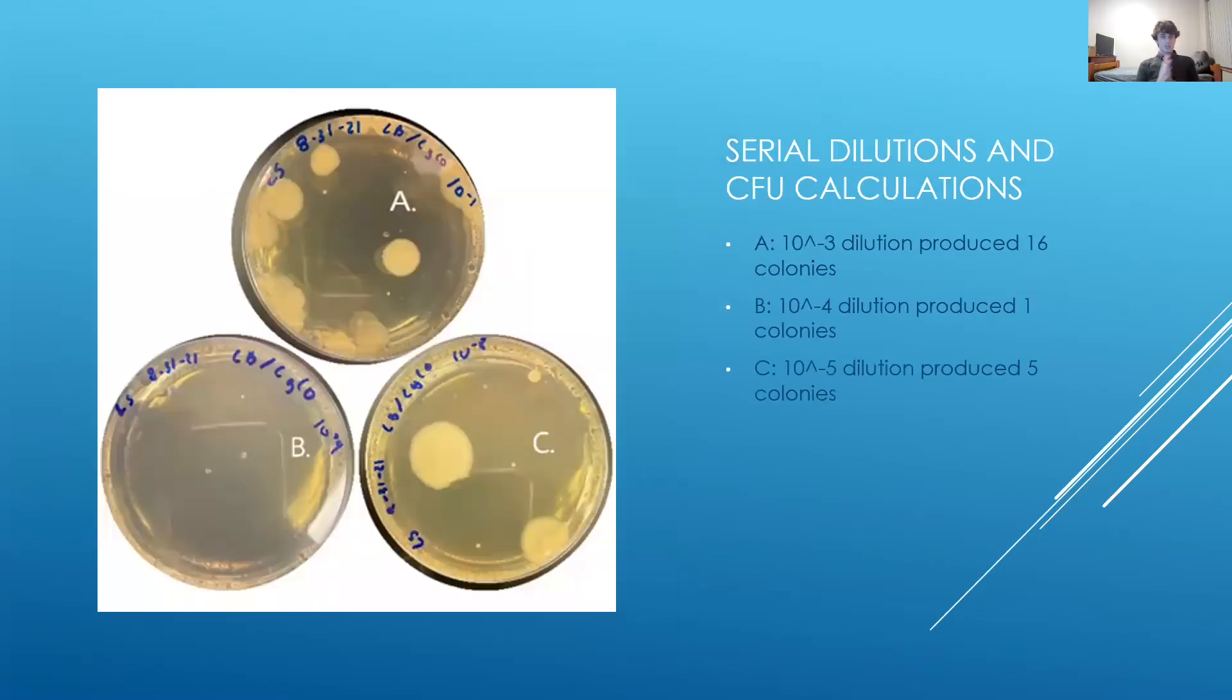After the soil sampling, I performed serial dilutions. This was done by vortexing one gram of the soil sample with 900 milliliters of water to make a 10 to the 1 dilution. Then 100 microliters was removed from the 10 to the 1 dilution and vortexed with a fresh 900 microliters to make a 10 to the 2 dilution. This process was repeated until a 10 to the 5 dilution was met.